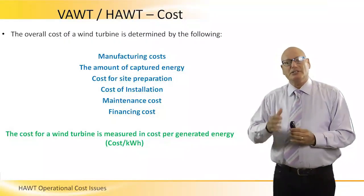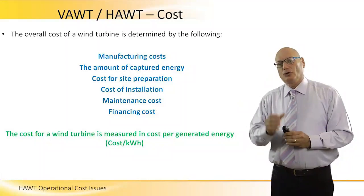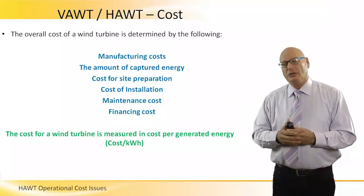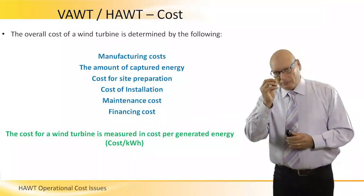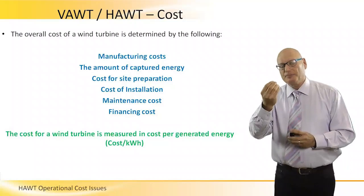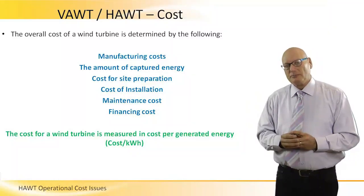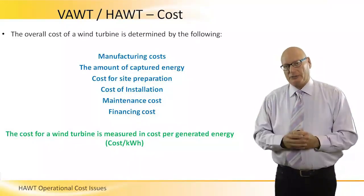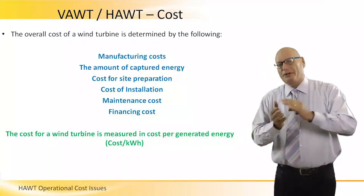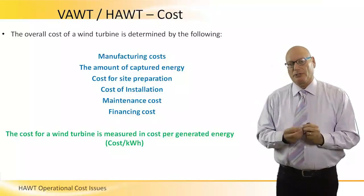The overall cost of a wind turbine is determined by manufacturing cost, the amount of captured energy, cost of site preparation, installation, ongoing maintenance, and financing cost. The unit for measuring cost is cost per kilowatt hour — that's how we evaluate a project. Not whether it's cheap or expensive, but whether it's economical from a cost-per-kilowatt-hour standpoint — the cost benefit.